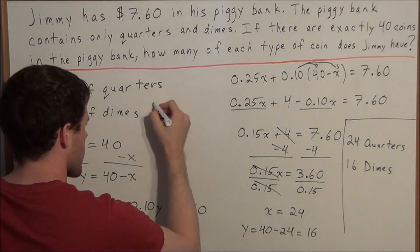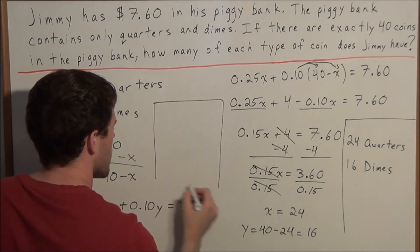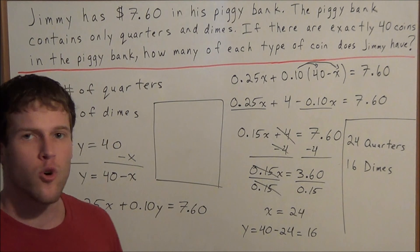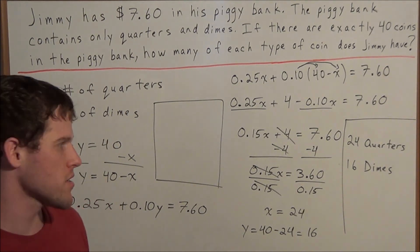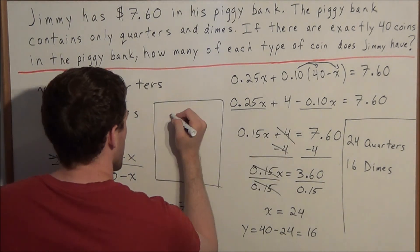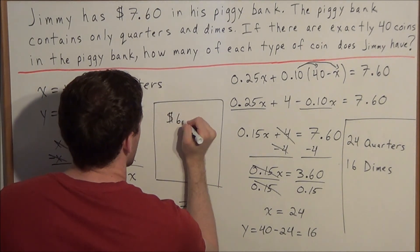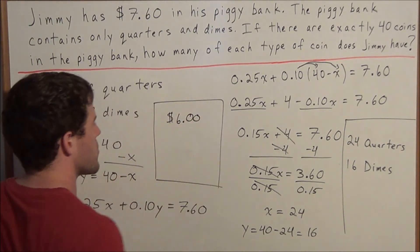And now a quick thing we could do to check that our answer is definitely right. If he has 24 quarters, remember, every 4 quarters is a dollar. So if we do 24 divided by 4, we have 6. So there is 6 dollars in quarters.